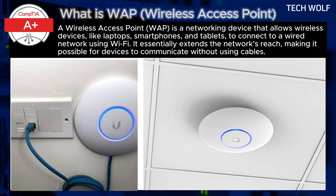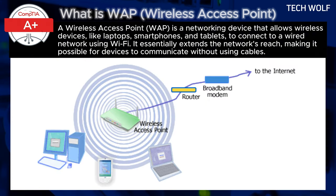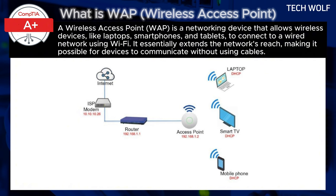How a Wireless Access Point works: A wireless access point is connected to a router or switch using an Ethernet cable, giving it access to the network's wired infrastructure. The access point broadcasts a wireless signal — Wi-Fi — within a specified range. Any wireless devices within that range can connect to the network by connecting to the access point's Wi-Fi signal.